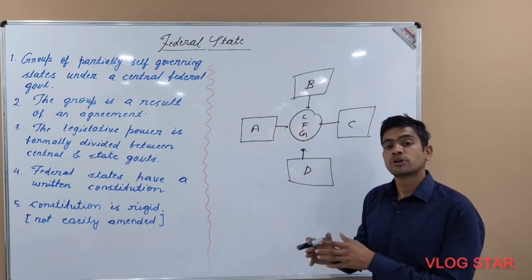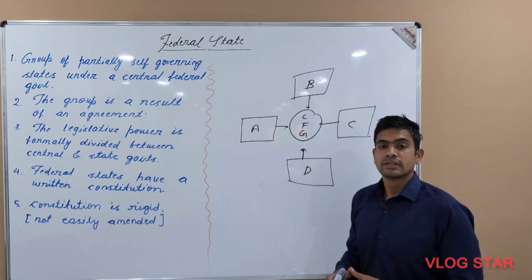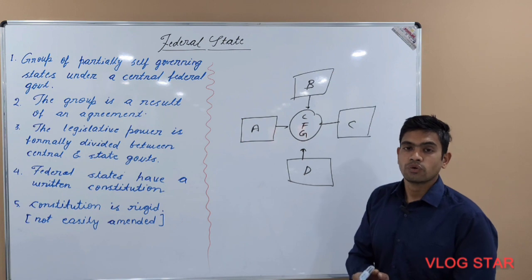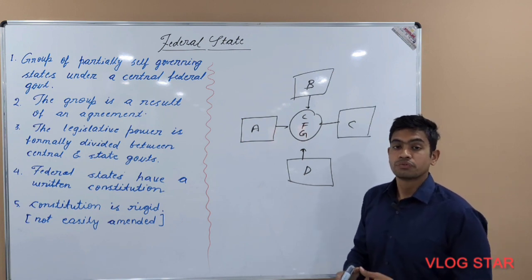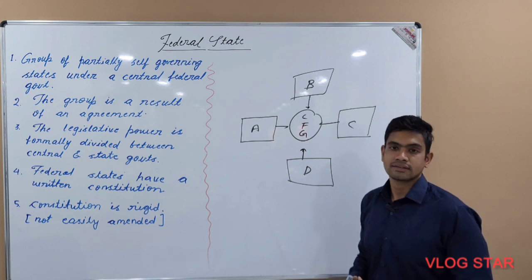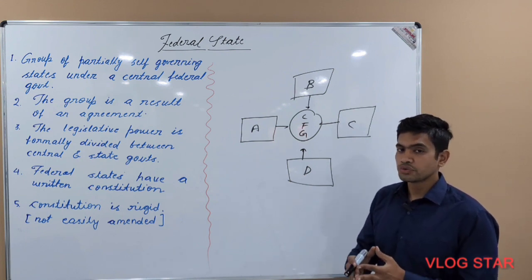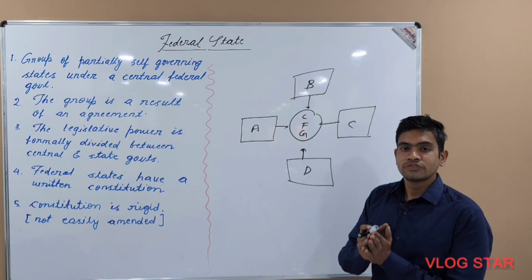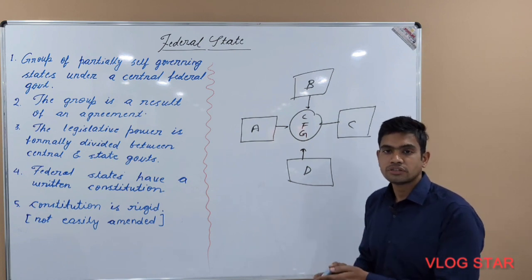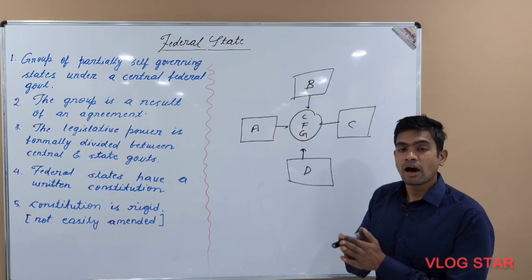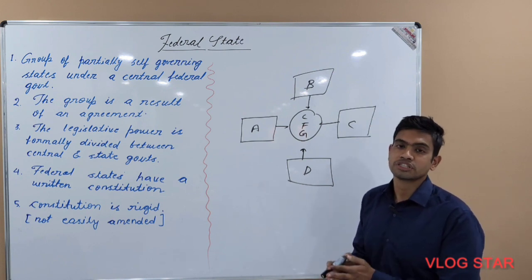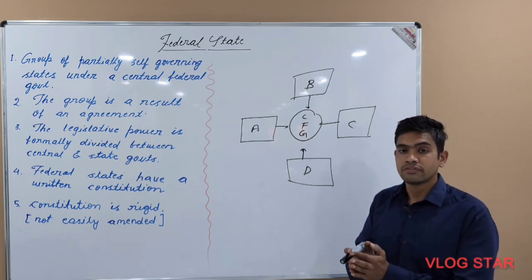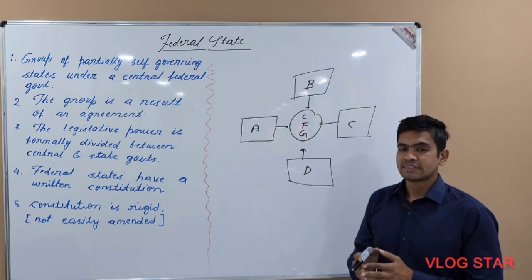The USA is a true federation because the states were pre-existing, and later they came together under an agreement to form the United States of America. But India is different — first India was created as a nation, and then states were created for administrative feasibility. So the US is a true federation, while India is a partial federation. That is why our Constitution uses the word 'Union' for India, not 'Federation.'